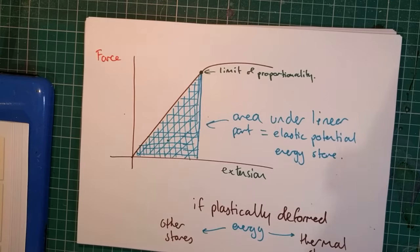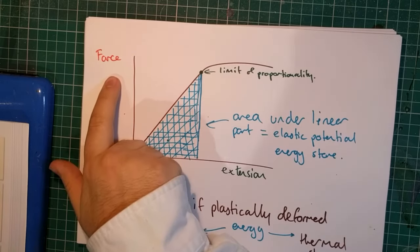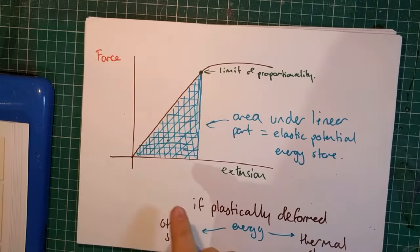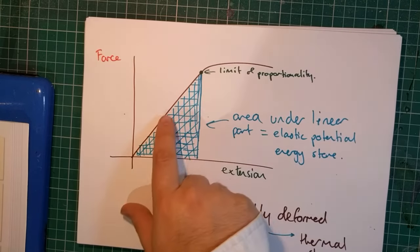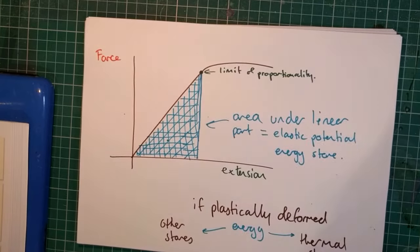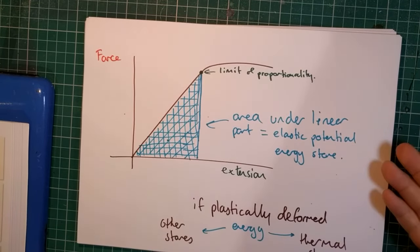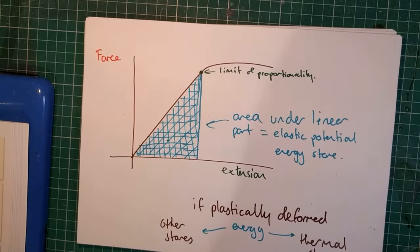There's another way of finding the amount of energy that's been transferred to the elastic potential energy store, and that's graphically. If you have a graph of extension against force, then the area under the linear part of that graph, up to the limit of proportionality, that area is equal to the size of the elastic potential energy store.